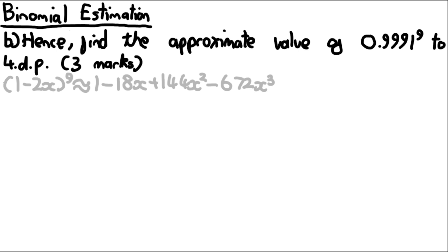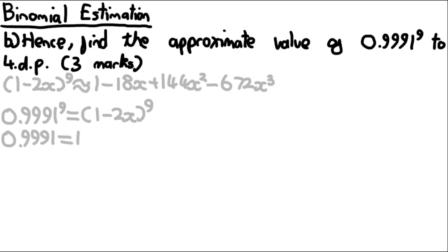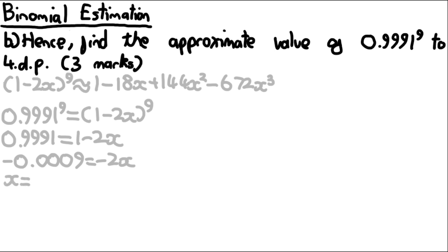Part B asks for the approximate value of 0.9991^9. We set 0.9991^9 equal to (1 − 2x)^9 and rearrange to make x the subject. Taking the ninth root of both sides: 1 − 2x = 0.9991. Bringing the 1 across: −2x = −0.0009. Dividing both sides by −2 gives x = 0.00045.